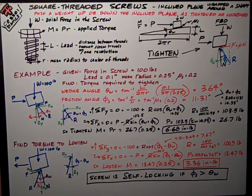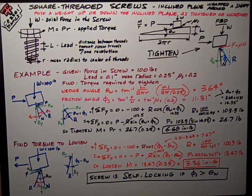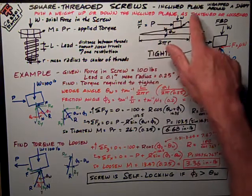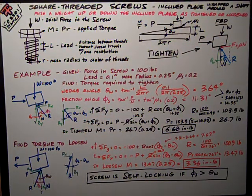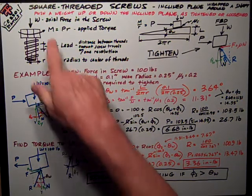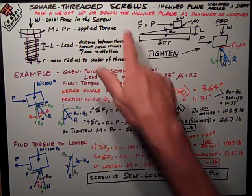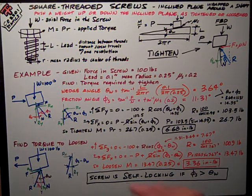Today we're talking about another kind of friction machine called a square-threaded screw. A square-threaded screw is an inclined plane wrapped around a shaft. It's kind of like a wedge. What we're doing with a screw is pushing a weight up or down the inclined plane as we tighten or loosen the screw.